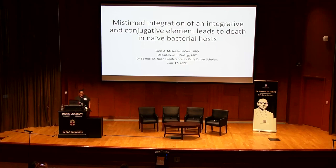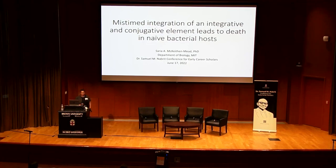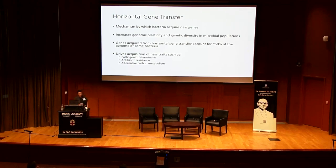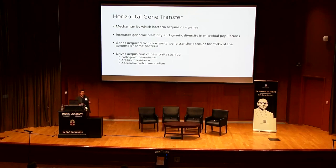Good afternoon. I'm very excited to be here today to tell you about my research, which focuses on how bacteria acquire new genetic information. This occurs through a process known as horizontal gene transfer, which is the primary driver of prokaryotic evolution. It plays a very important role in that it increases genomic plasticity and genetic diversity in microbial populations. In fact, for some bacteria, approximately 50% of the genes encoded on their genome have been acquired horizontally.